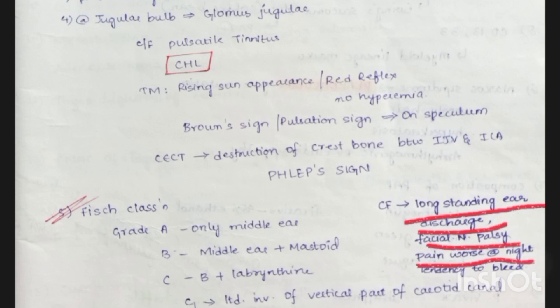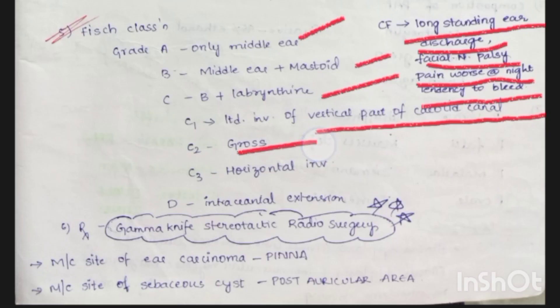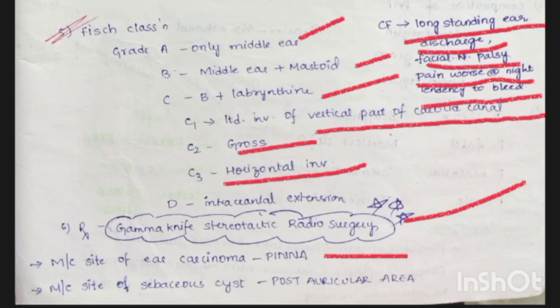For long-standing ear discharge with facial nerve palsy, pain worse at night, and tendency to bleed — consider glomus tumor. Fisch classification: Grade A — only middle ear involved; Grade B — middle ear plus mastoid; Grade C — middle ear, mastoid, and labyrinth involved (C1: limited to vertical carotid canal, C2: gross involvement, C3: horizontal involvement); Grade D — intracranial extension. Treatment is gamma knife stereotactic radiosurgery. Most common site of ear carcinoma and sebaceous cyst is the post-auricular area.